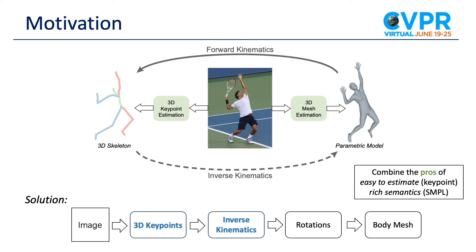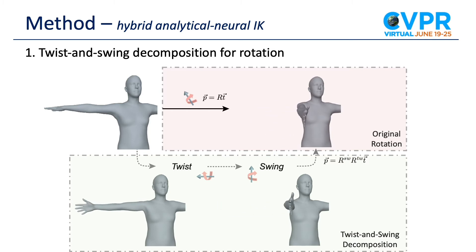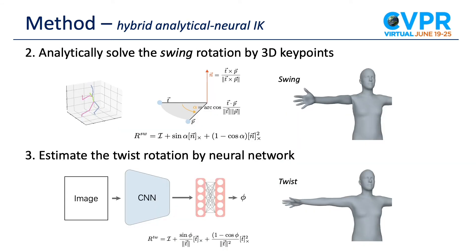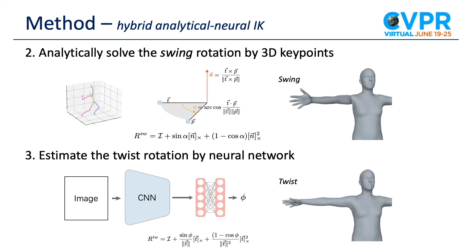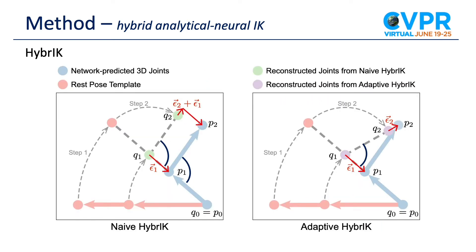The key of this pipeline is how to design an effective and differentiable inverse kinematics algorithm. The inverse kinematics problem is ill-posed because there are many solutions to fulfill the target joint positions. We first observe that all rotations can be decomposed into a twist rotation and a swing rotation. The swing rotation can be solved by 3D key points in an analytical manner, and we can leverage the neural network to estimate the twist rotation. In this way, the difficulty of learning is significantly reduced. Compared to the original 3DOF rotation, the network now only needs to estimate the 1DOF rotation.